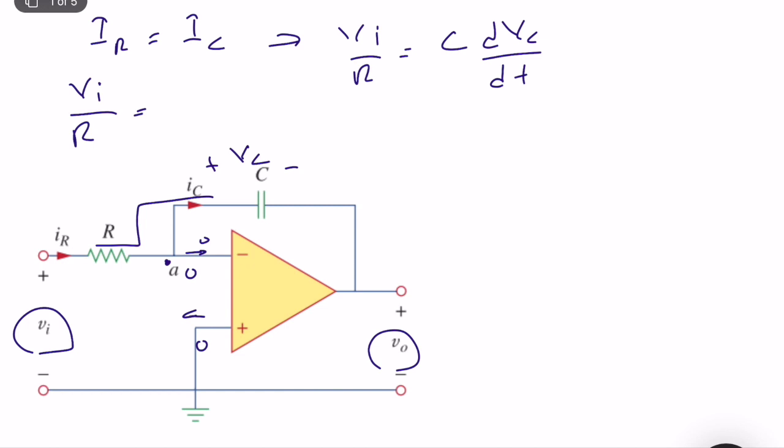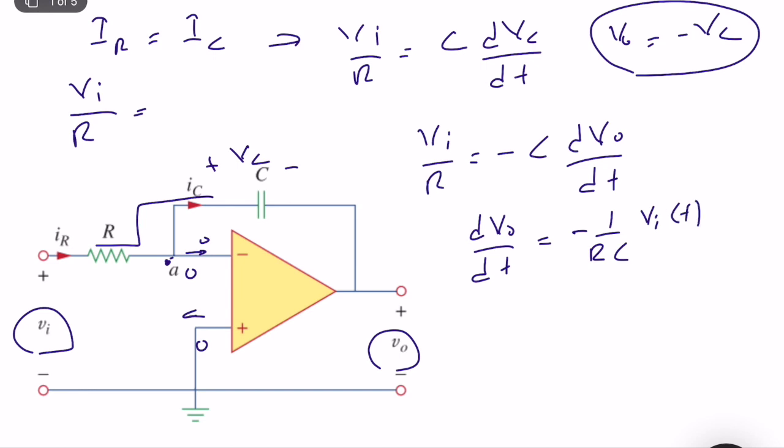So we don't need VC, we need Vo, the output voltage. So what is Vo? Vo is equal to, since this is zero, this is Vo minus VC. Because this is plus and minus, but this is zero, Vo, so technically Vo is equal to minus VC. So technically, this is equal to Vi divided by R is equal to minus C dVo divided by dt. So let's reorganize the equation. dVo divided by dt is equal to minus 1 over RC times Vi. And Vi can be a function of t. It can be constant or something else.